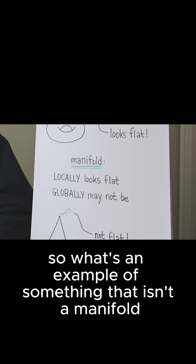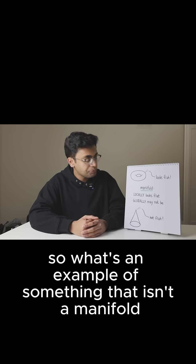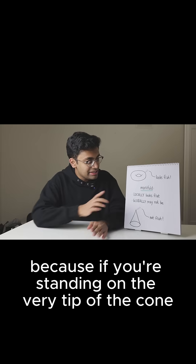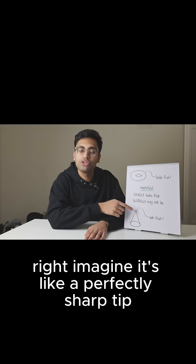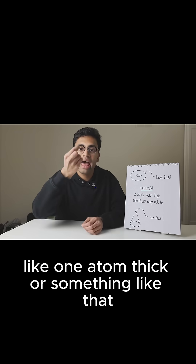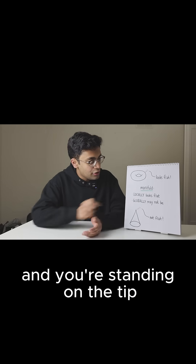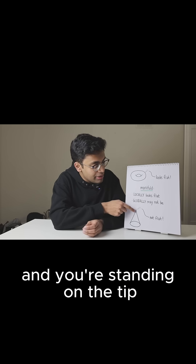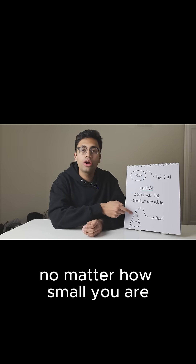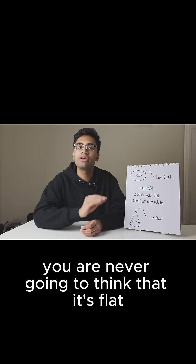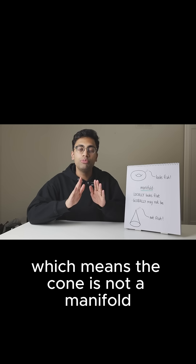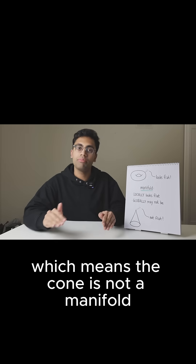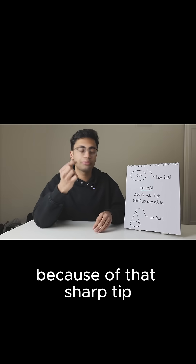So what's an example of something that isn't a manifold? For example, a cone. Because if you're standing on the very tip of the cone, imagine it's like a perfectly sharp tip, like one atom thick or something like that. And you're standing on the tip, no matter how small you are, you are never going to think that it's flat. Which means the cone is not a manifold because of that sharp tip.